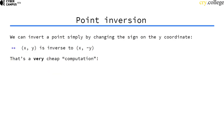Inverting a point — a point consisting of an x and a y-coordinate — is actually very cheap, because we just have to additively invert the y-coordinate. In terms of computation, this is of course a very cheap operation because we just have to keep a sign.